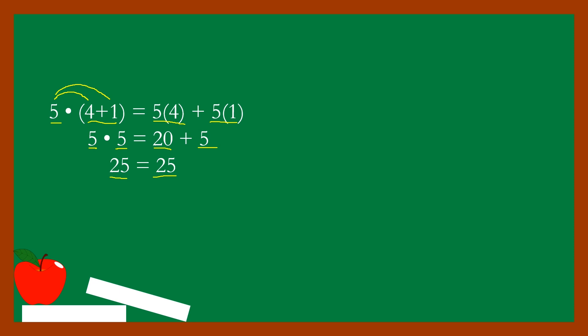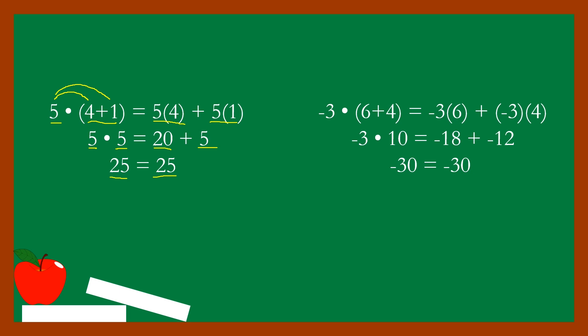Next example: negative three multiplied by the sum of six and four. Simplifying: six plus four equals ten, and ten times negative three equals negative thirty. Using distributive property: negative three times six equals negative eighteen, and negative three times four equals negative twelve. Negative eighteen plus negative twelve equals negative thirty — the same result.